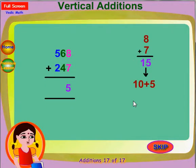15 is 10 plus 5. Write 5 in the answer and put a dot on the number 8 to indicate 10. This dot is considered as 1 ten.